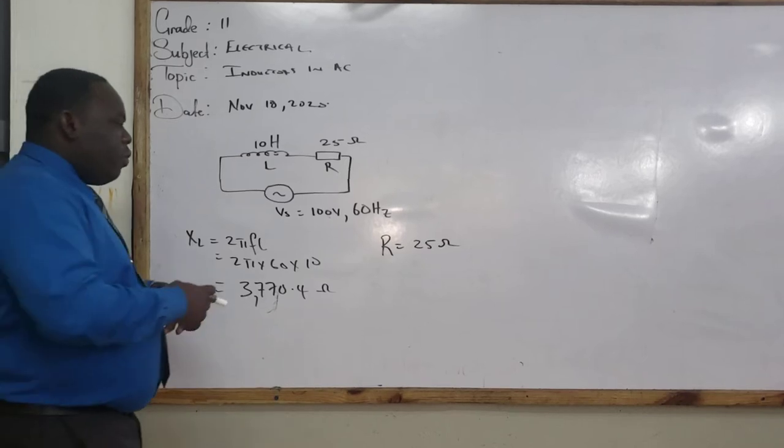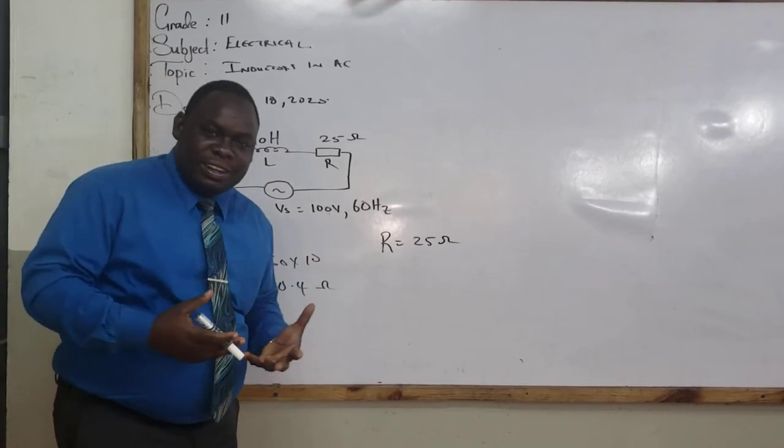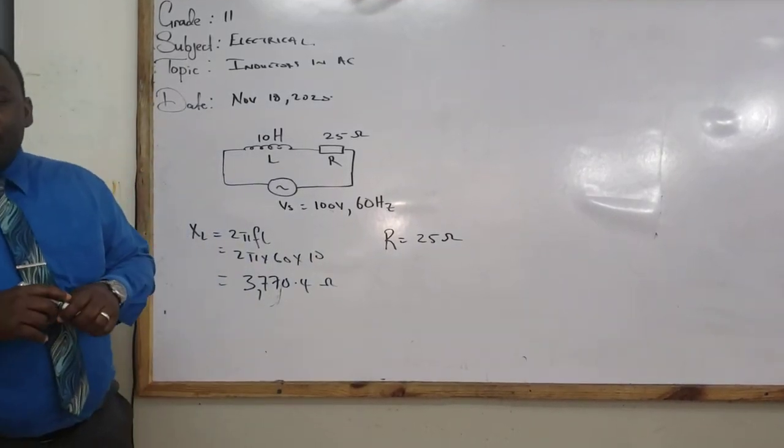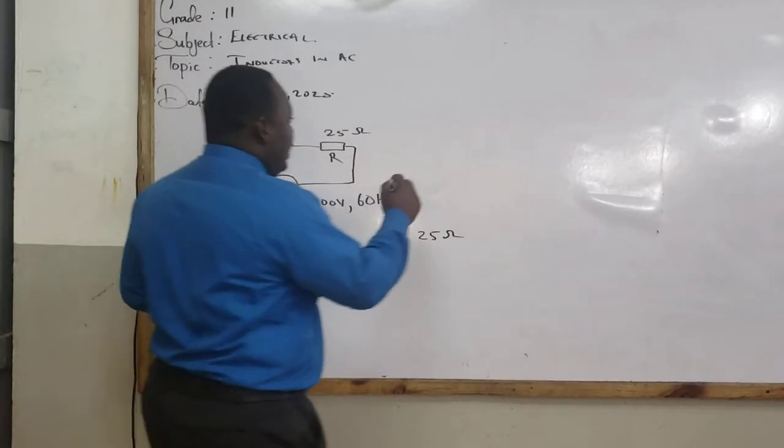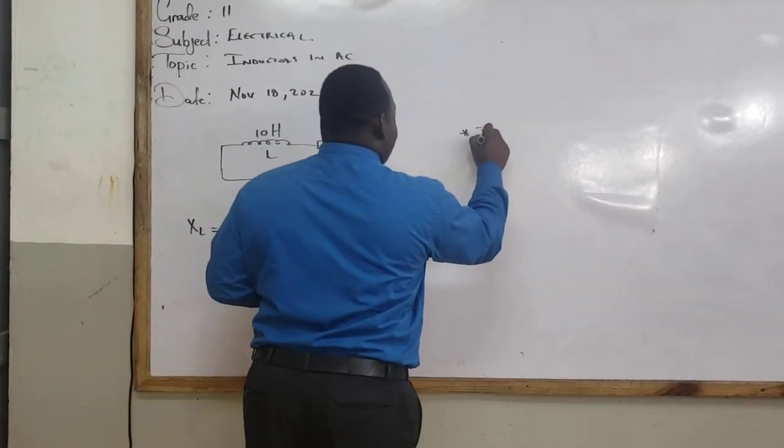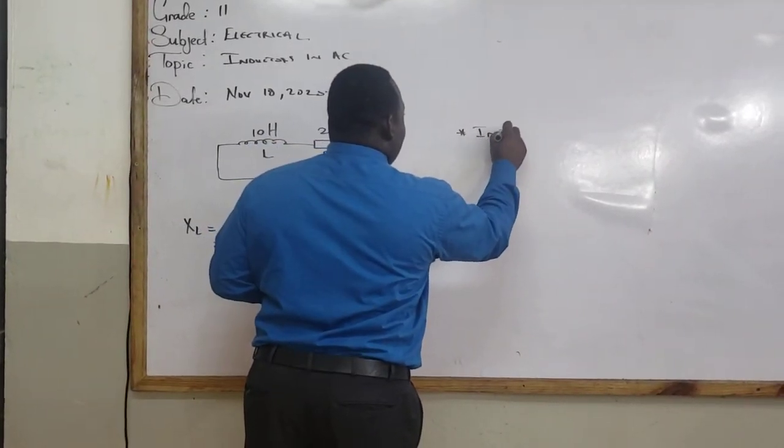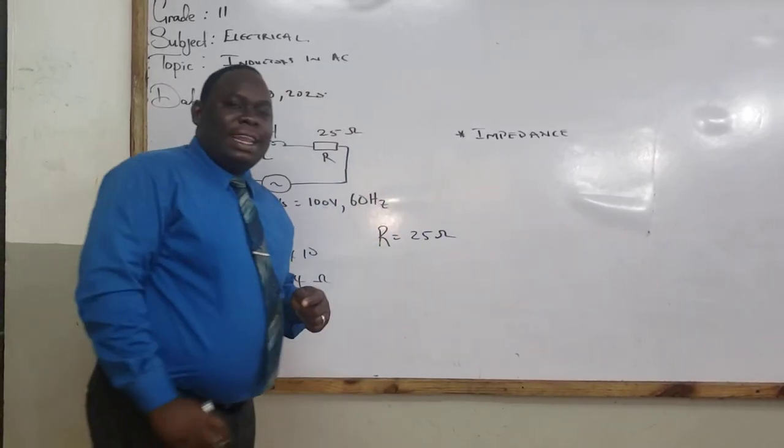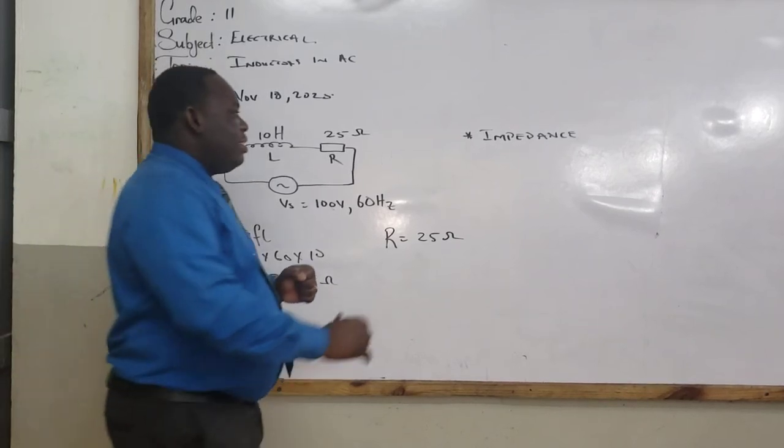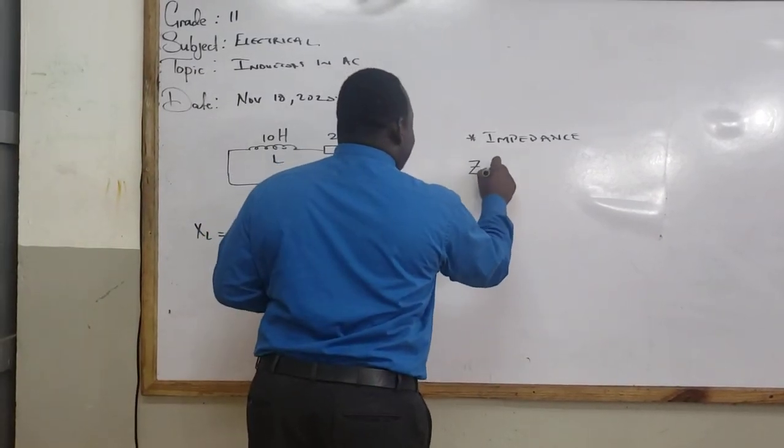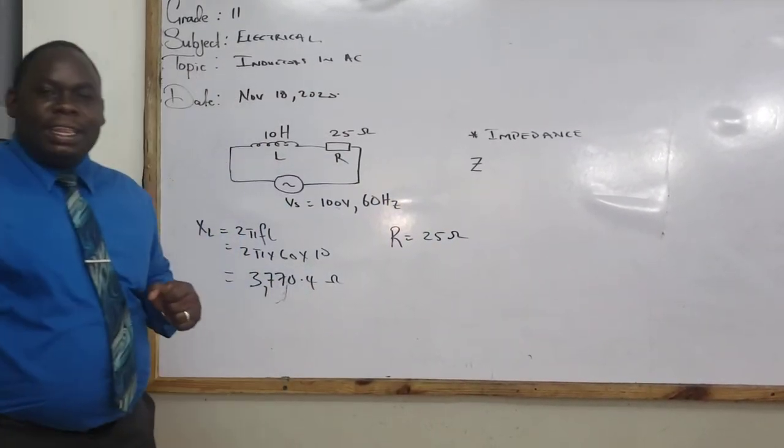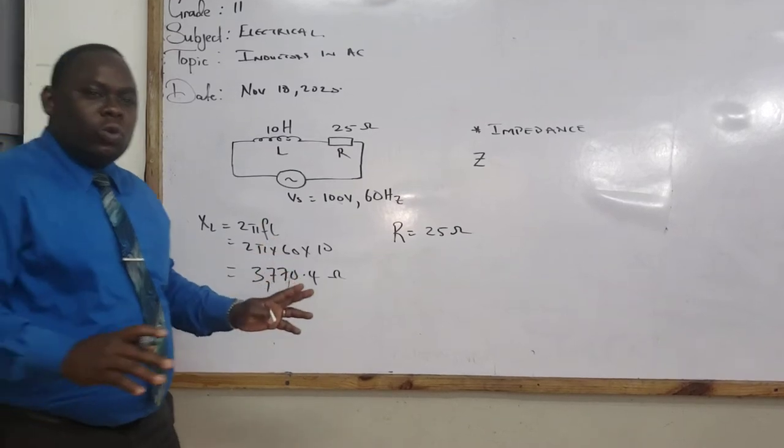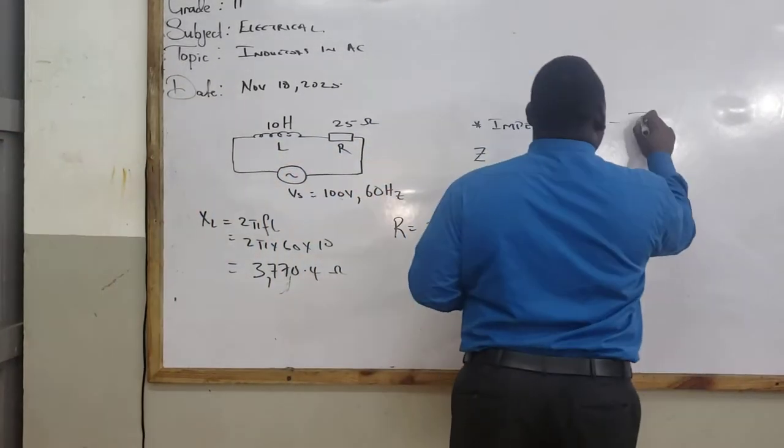Now, how do we find total opposition? Now, that is where we are going to learn the new word. That word is called impedance. What is that word Mr. Fraser? Impedance. Impedance. So that is impedance. Now, impedance, the symbol for impedance is Z. And impedance refers to the total opposition. Total opposition.